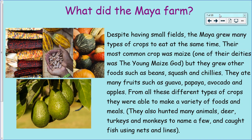What did the Maya farm? Despite having small fields, the Maya grew many types of crops to eat at the same time. Their most common crop was maize - that's corn, sweet corn. One of their deities, the young maize god, shows how special maize was to them. But they grew other foods as well, such as beans, squash, and chilies. They ate many fruits such as guava, papaya, avocado, and apples. They also hunted many animals, for example deer, turkeys, and monkeys, and caught fish using nets and lines.